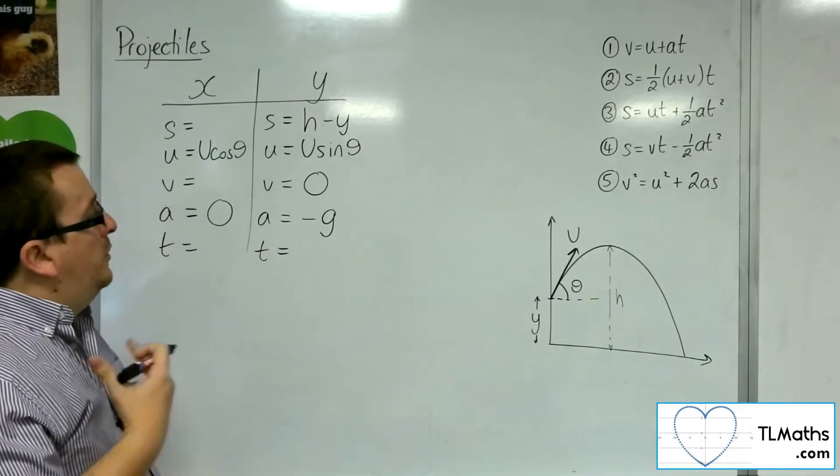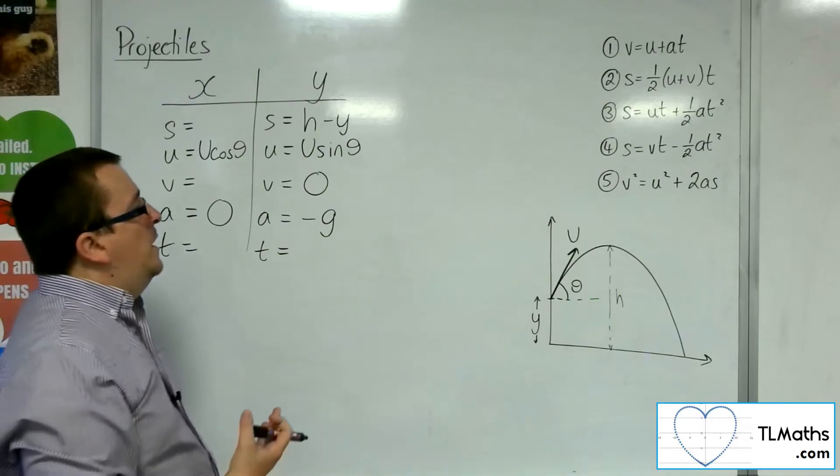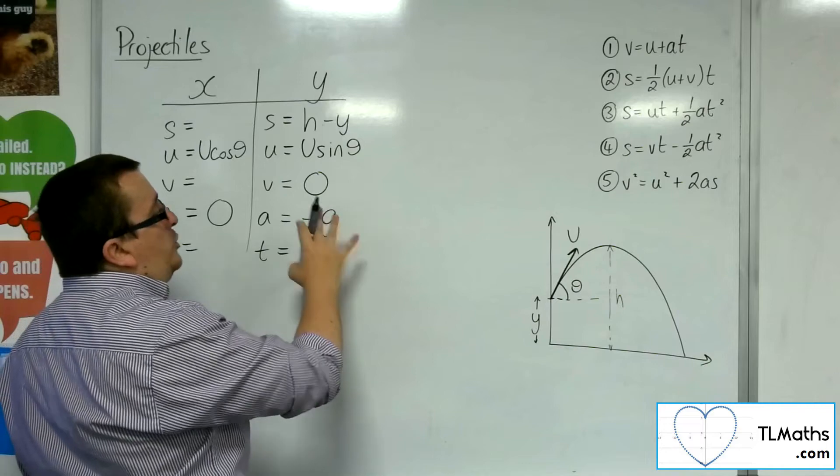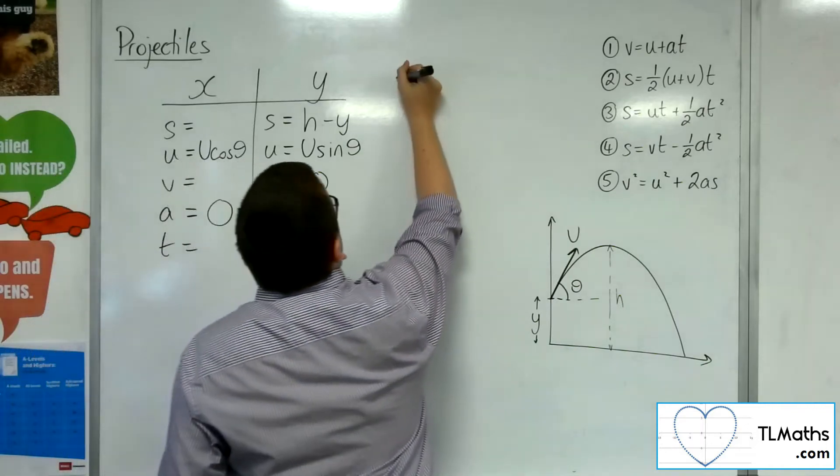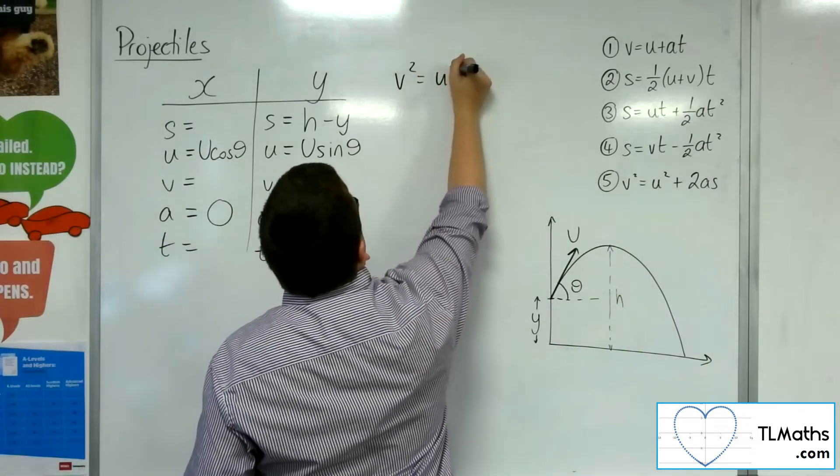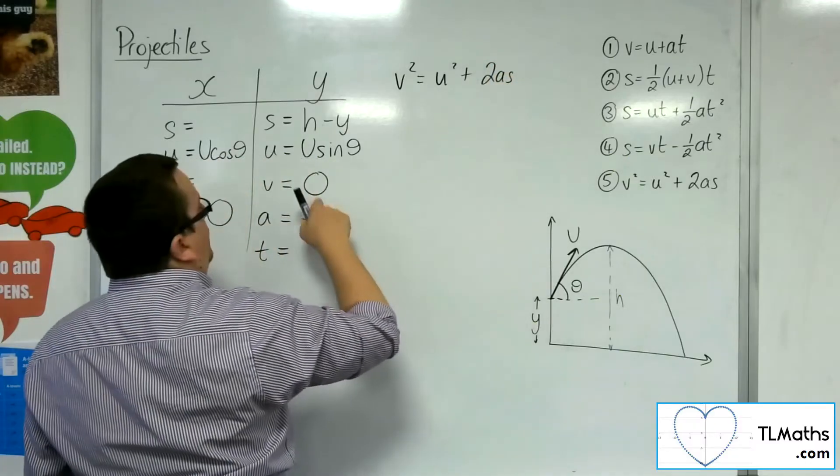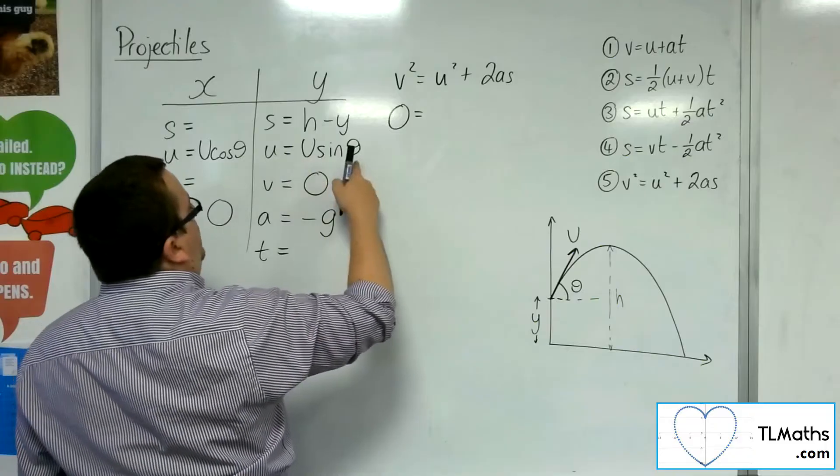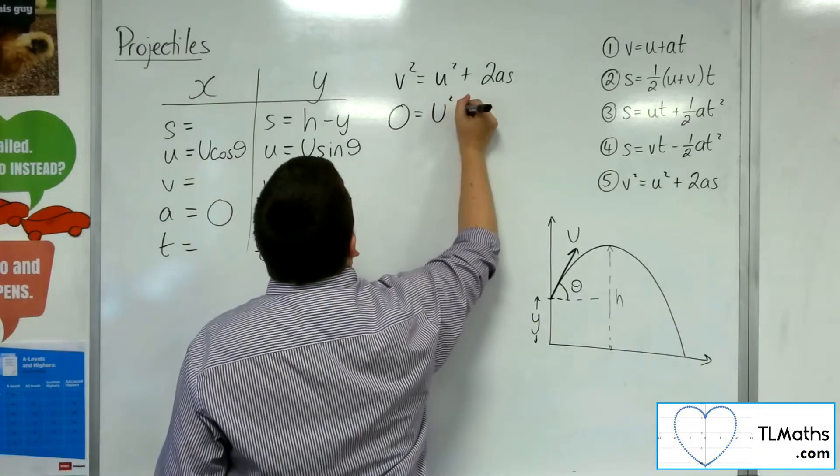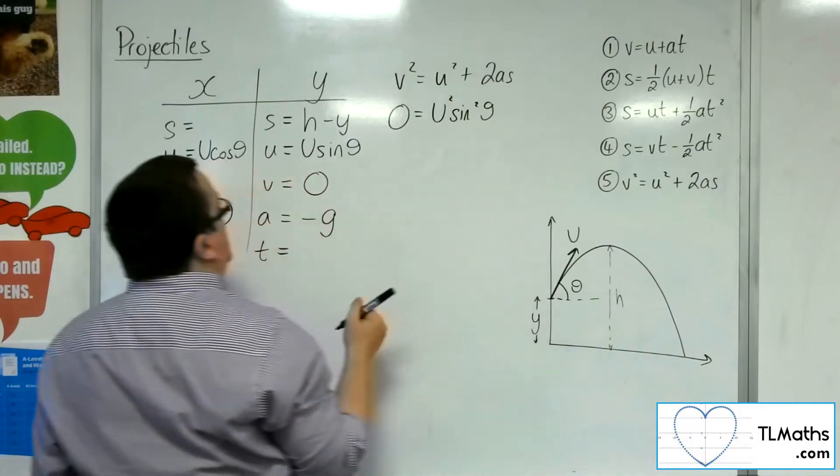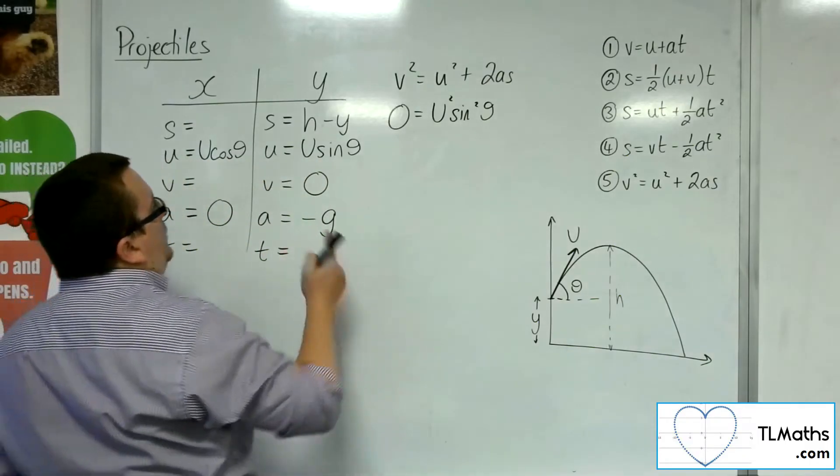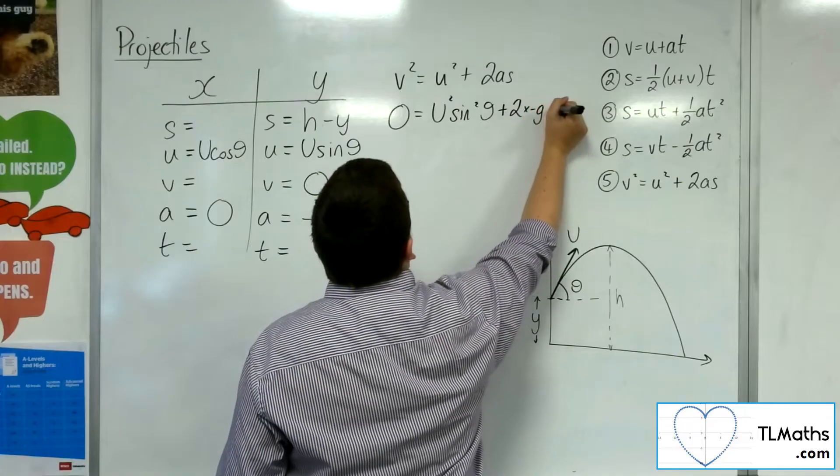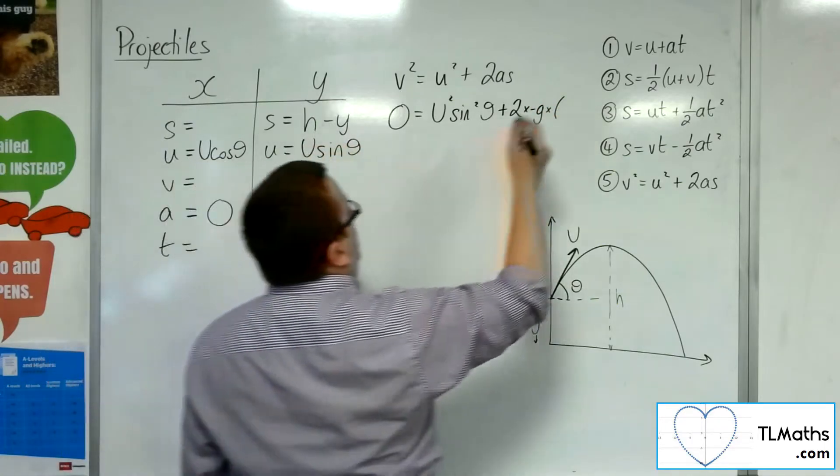Okay, so what we've got? We've got everything we really need here now. So what I can do is I can substitute that information into equation number 5. This v squared is u squared plus 2AS. So v squared is 0 squared, so 0, is equal to u sine theta squared, so u squared sine squared theta, plus 2AS plus 2 lots of minus g times h minus y.